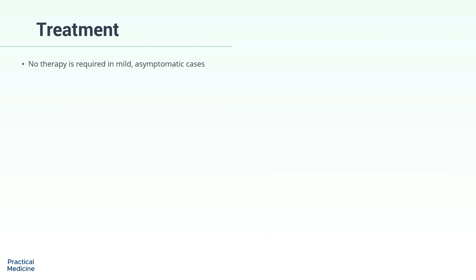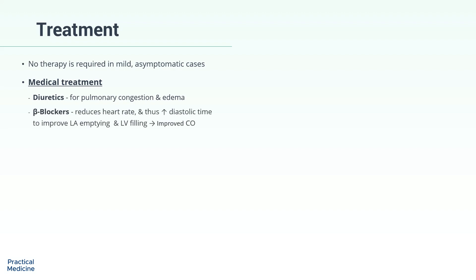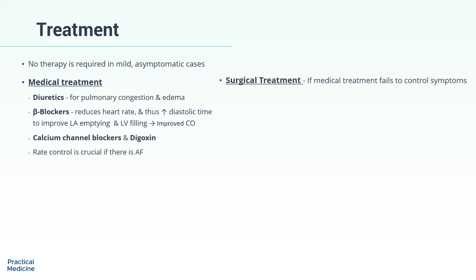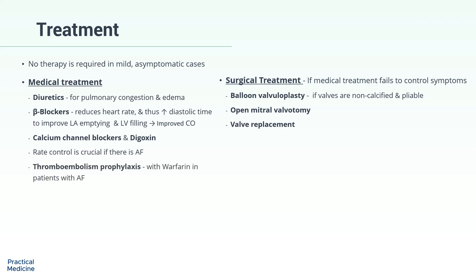Treatment: No therapy is required in mild, asymptomatic cases. Medical treatment includes diuretics for pulmonary congestion and edema. Beta blockers are used to decrease heart rate, thus increasing diastolic time to improve left atrial emptying and left ventricular filling, and so cardiac output. Calcium channel blockers and digoxin can be used as alternative options. Heart rate control is especially crucial in patients with AF. If medical treatment fails to control symptoms, balloon valvuloplasty is done where valves are pliable and non-calcified. Other surgical options include open mitral valvotomy or valve replacement. Thromboembolism prophylaxis with warfarin is considered in patients with AF.